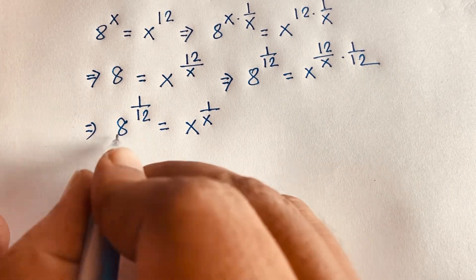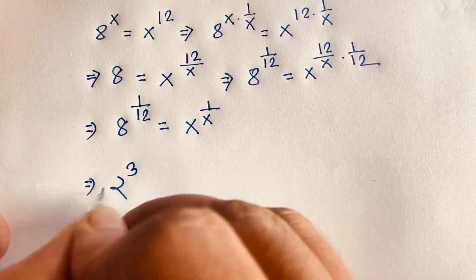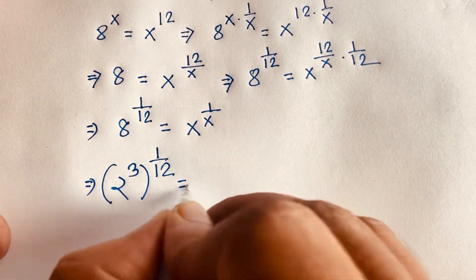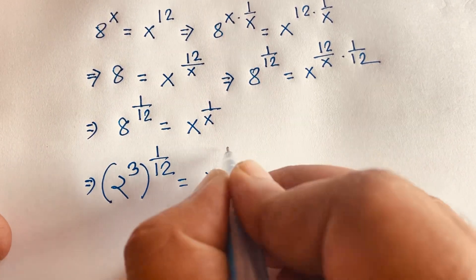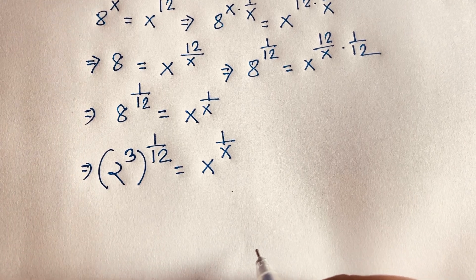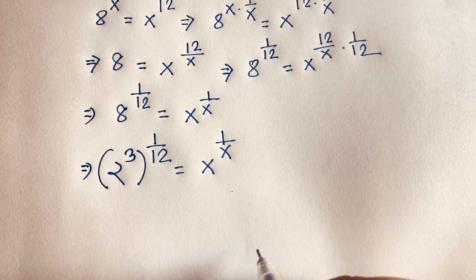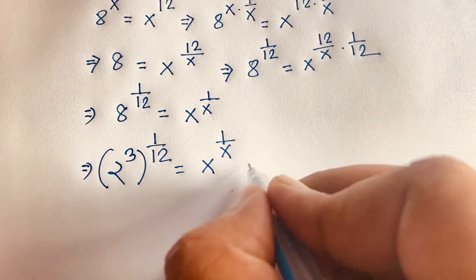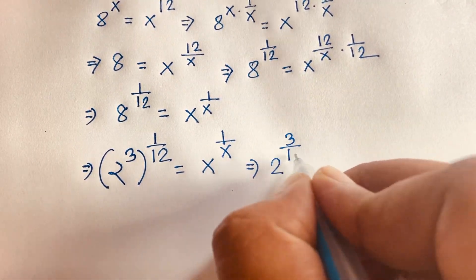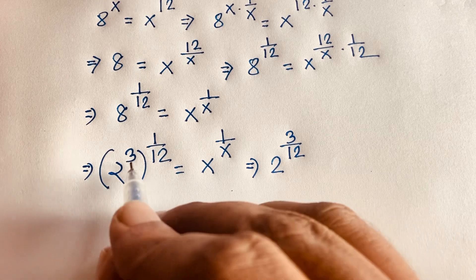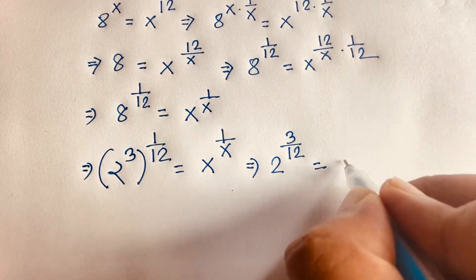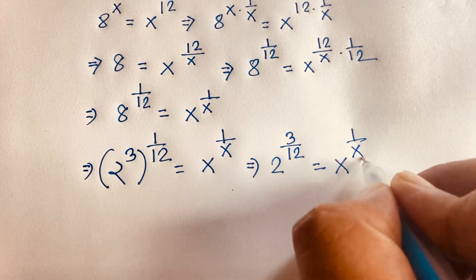Now I rewrite 8 as 2 to the power 3, whole to the power 1 over 12, equal to x to the power 1 over x. This gives us 2 to the power 3 over 12 is equal to x to the power 1 over x.